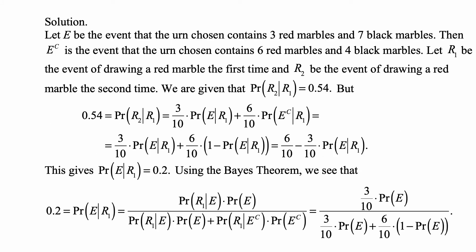Let E be the event that the urn chosen contains three red marbles and seven black marbles. Then E complement is the event that the urn chosen contains six red marbles and four black marbles. Let r1 be the event of drawing a red marble the first time and r2 be the event of drawing a red marble the second time.